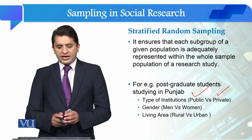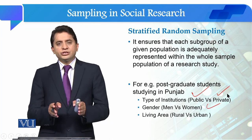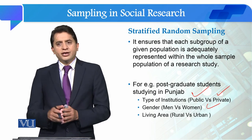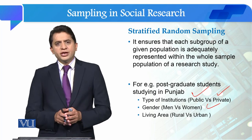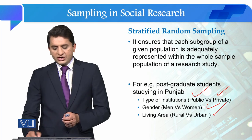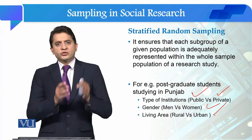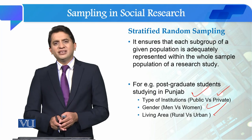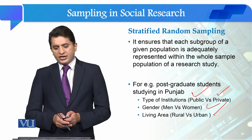The second stratum is gender-based. The third stratum is based on living area — which students belong to rural areas and which students belong to urban areas. We must include them in our sample on this basis as well.